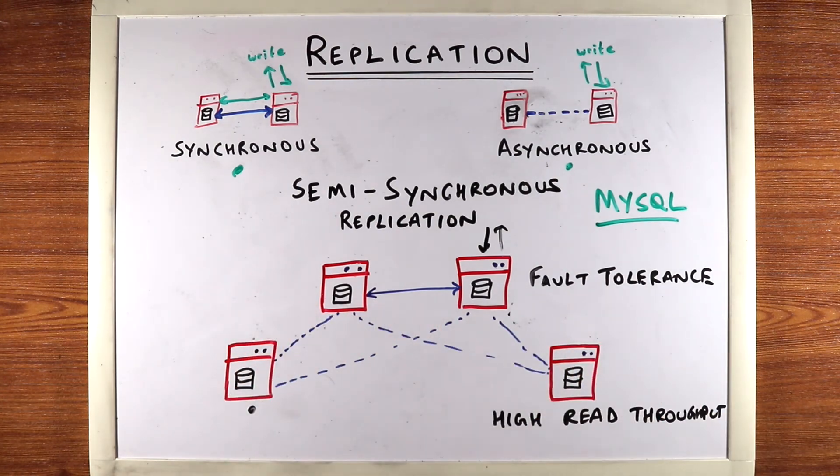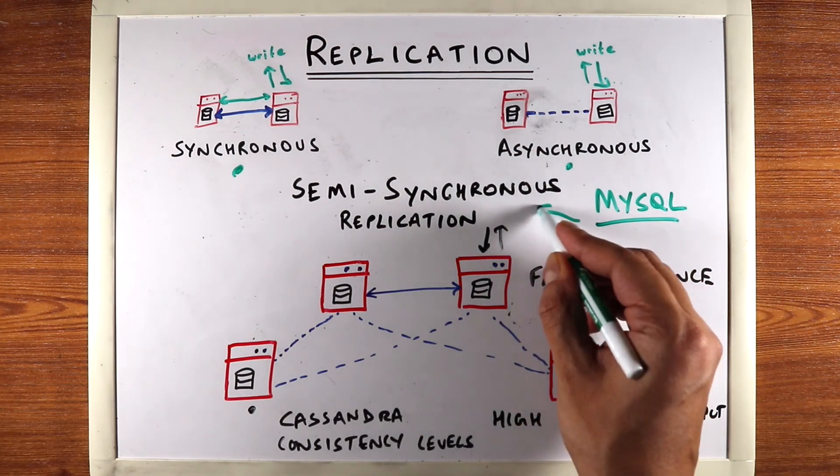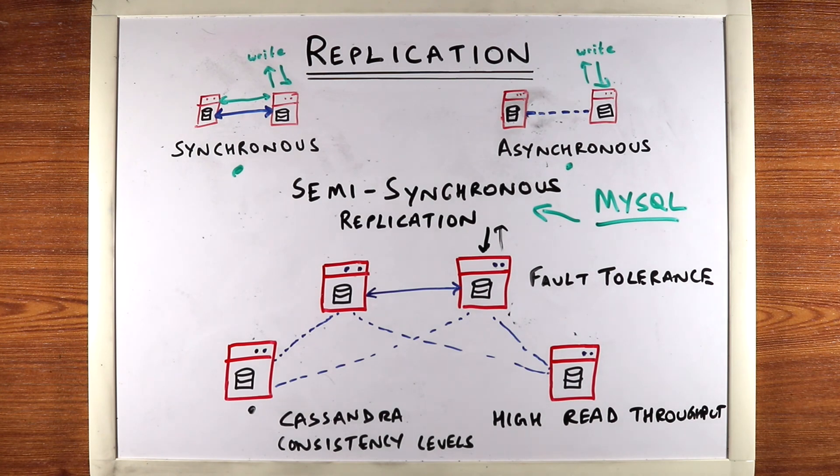Now, many databases are configurable for different kinds of replication scenarios. They have different names—for example, Cassandra has the idea of consistency levels, MySQL calls it semi-synchronous replication. But the whole idea is that you can actually set up a hybrid setup depending on the needs of your data.